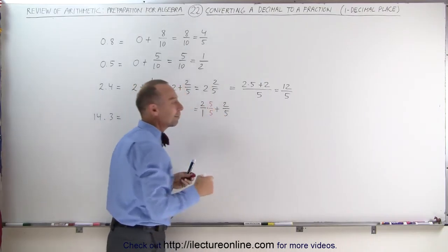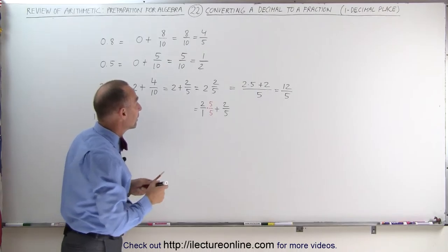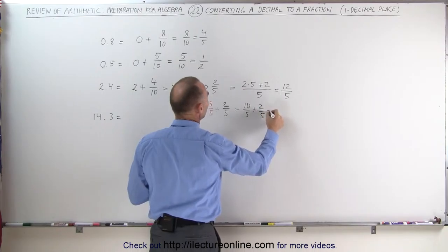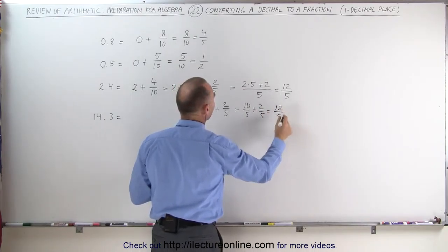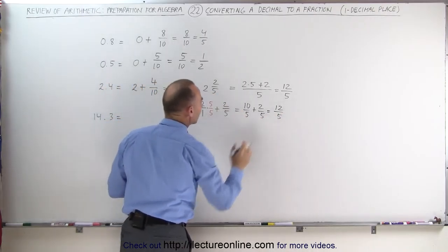Notice when we multiply times 5 over 5, that's like multiplying by 1, nothing has changed. Now this becomes 10 over 5 plus 2 over 5, which is equal to 12 over 5. Again, what we did here was go from a mixed number to an improper fraction.